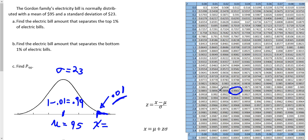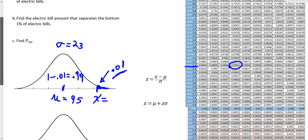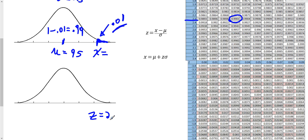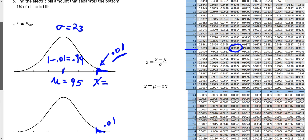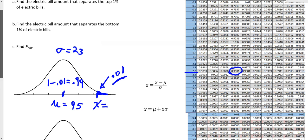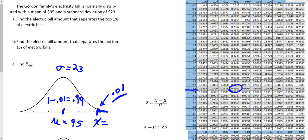So I need this Z score. I have 2.3 for the ones and tenths place, and 3 for the hundredths place. So this is Z = 2.33. That Z score corresponds to an area of 1% (0.01) in the upper tail and an area of 0.99 to the left. The values in blue on the table represent Z scores.